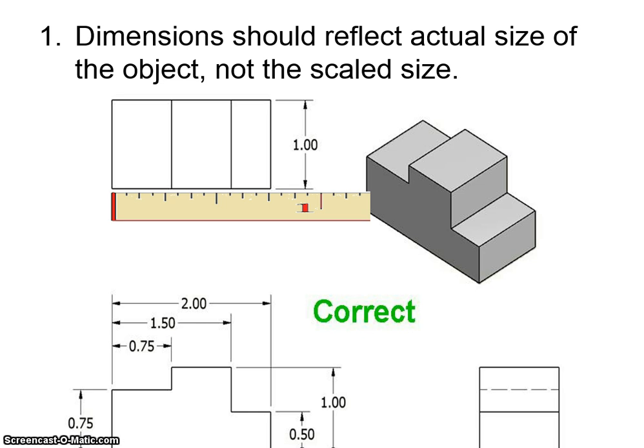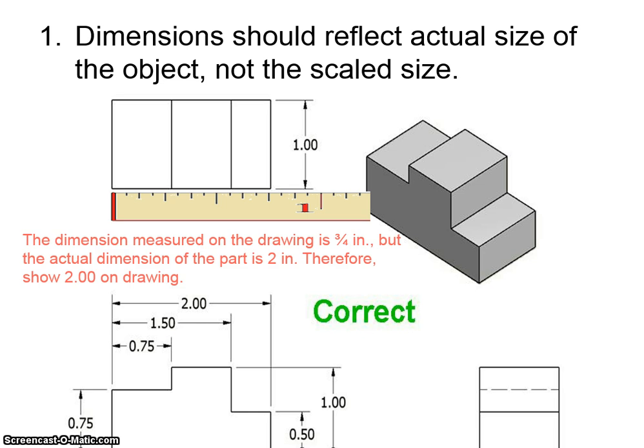So rule number one is very basic. The dimensioning is supposed to reflect the object size, not the scale it is on the paper. So obviously, scales are going to be different. In this case here, you'll see the dimension part is three quarters of an inch, but the actual dimension on the actual part is two inches. So you would use two inches on the drawing, and you can tell this is supposed to be two inches based on this dimension right here from the front view. Remember, these line up for a reason, so you can use dimensions in between views.